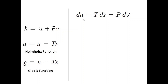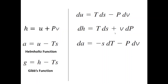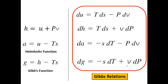Beginning with U: from the TdS relations studied in entropy, dU = TdS - PdV. Differentiating and substituting, we get dH = TdS + VdP. Similarly, dA can be written by differentiating the Helmholtz function and substituting dU. For the Gibbs function, differentiating and substituting dH gives dG = -SdT + VdP. These four are called the Gibbs relations and form the basis for deriving Maxwell's equations.